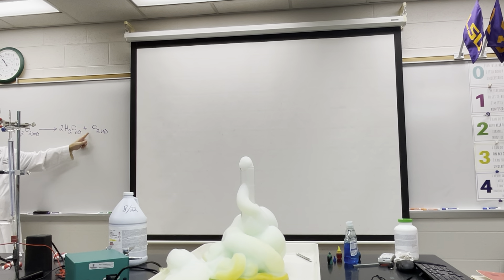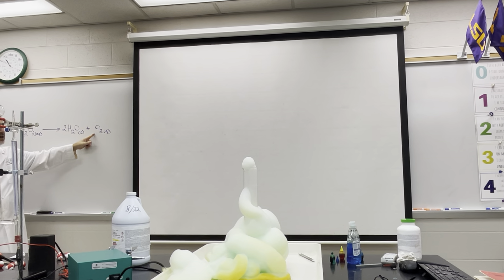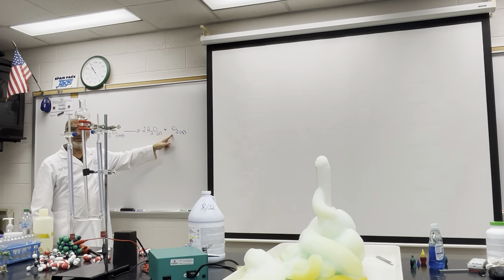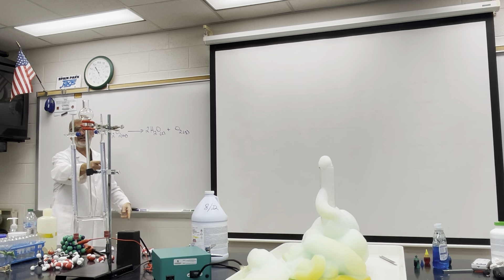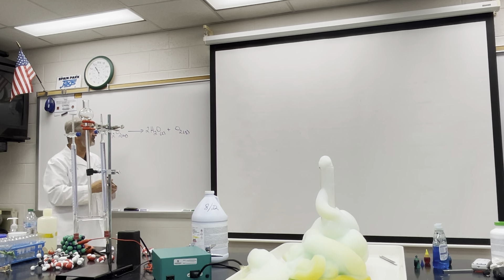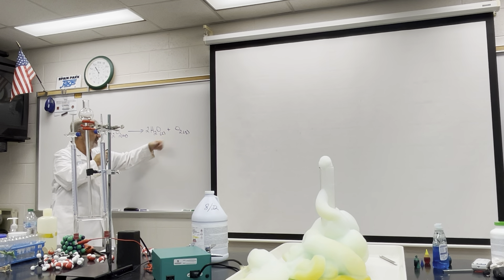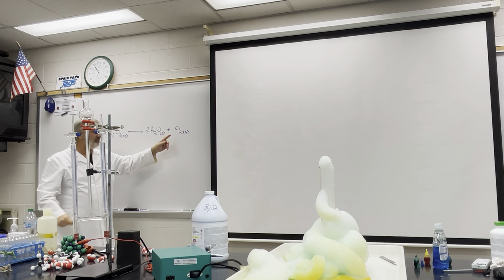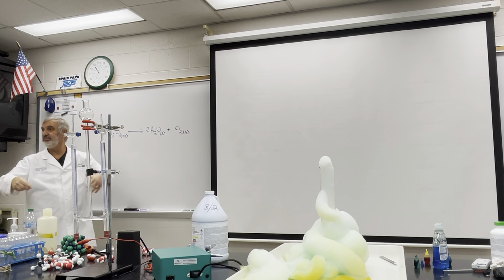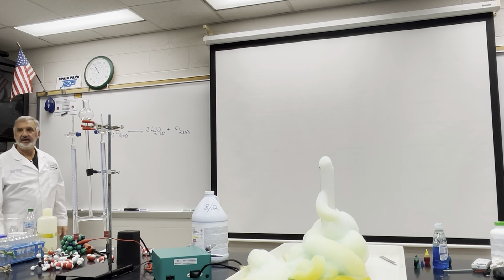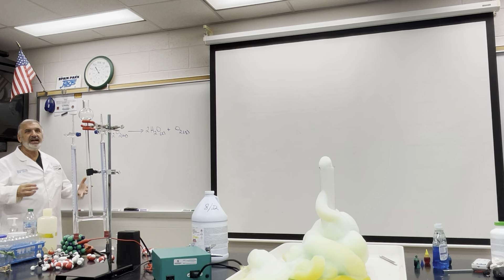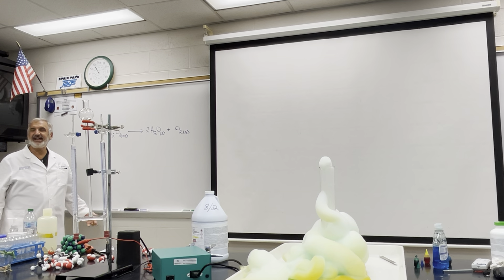Let's collect the hydrogen again and do the test tube bark once more. Collect the hydrogen — keep it upside down because hydrogen is lighter than air. Never hold a test tube in your hand when doing a chemical reaction. We can see that electricity initiates a chemical reaction.